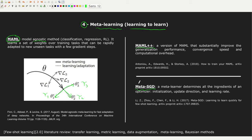MAML has received over a thousand citations and many extensions, including MAML++ which improves generalization performance, convergence speed, and computational overhead. Another extension, Meta-SGD, uses the same idea but adds a meta-learner that determines the initialization, update direction, and learning rate of a stochastic gradient descent optimizer. By learning the learning rate, you can make larger jumps in weight space and reach the target configuration in just one step, rather than the multiple small steps needed in standard MAML.